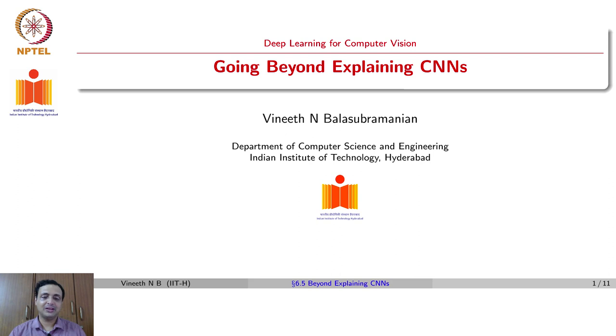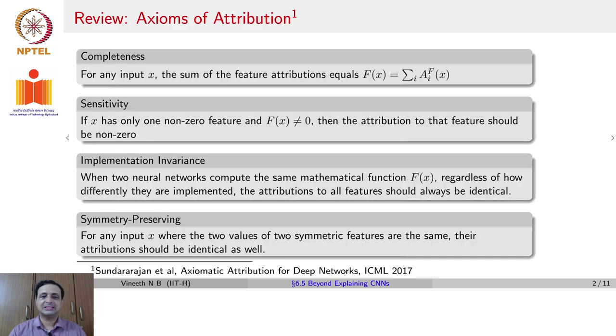For the last lecture of this week, we are going to try to go beyond explaining CNNs and look at a couple of interesting applications of using the concepts that we saw so far: gradients and various other artifacts for explaining CNNs, but use them in interesting ways. Before we go there, let us review one of the homeworks that we left behind last lecture, which was for you to read Axioms of Attribution. I hope you had a chance to go through that work.